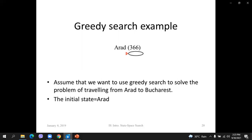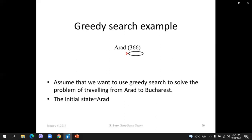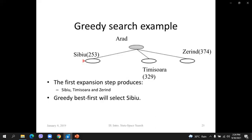That's our starting state — what we put in the fringe. We take it out and look at all the possible places we can go from Arad. In this map there is the option of going to Zerind, Sibiu, and Timisoara. We explore the distances from Sibiu to Bucharest, from Timisoara to Bucharest, and from Zerind to Bucharest.